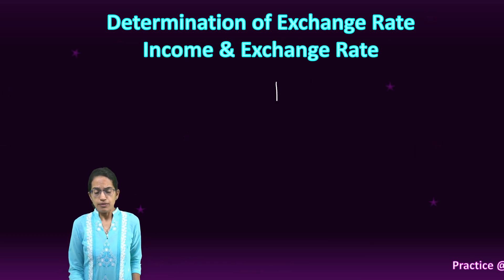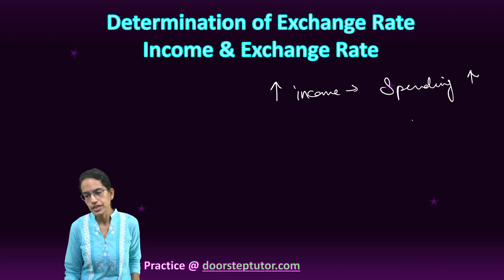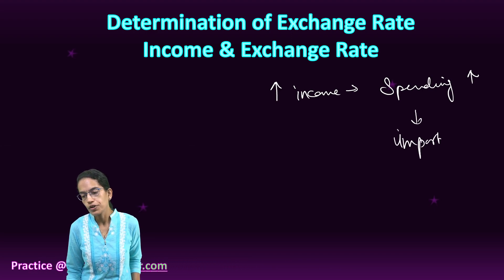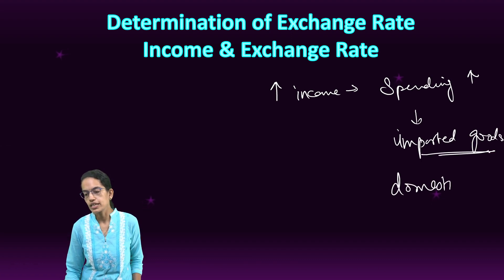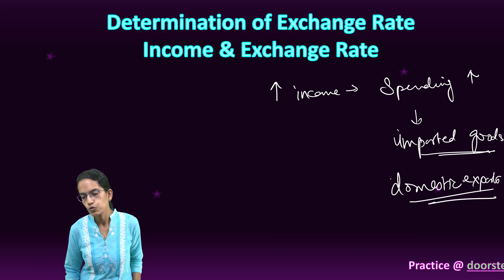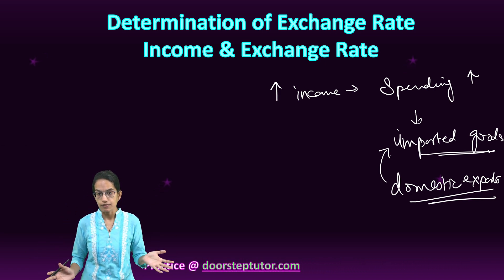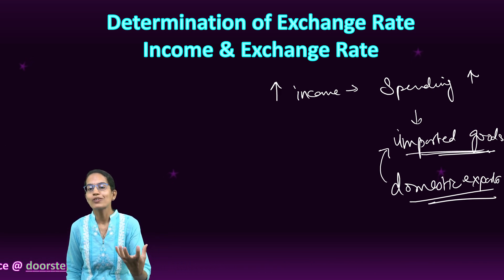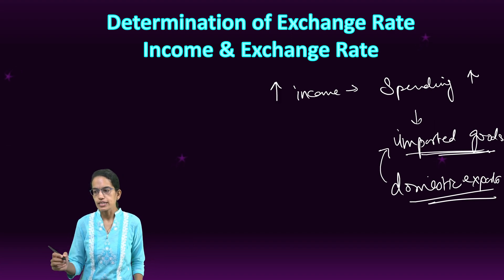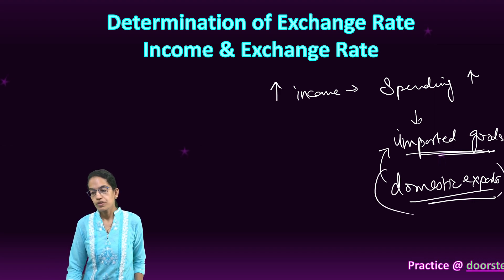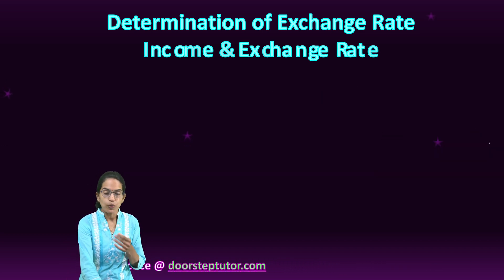The next factor is income. As there is an increase in income, the spending of a person would increase. As spending increases, the person would buy more imported products. When imported goods are bought more, this would affect domestic exports and the amount of money flowing out of the country. So, the aggregate demand would increase at a faster pace, but the money in circulation is not being utilized within the country — it's going out. There would be a significant change in the imported goods registered.